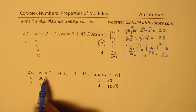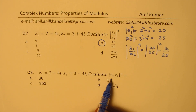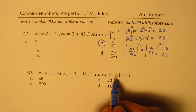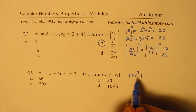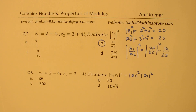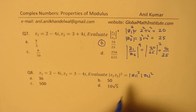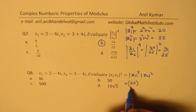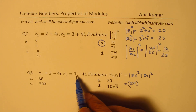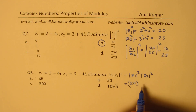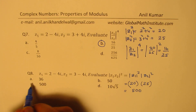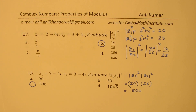Question number eight: given z1 and z2, evaluate the modulus of their product. The modulus of the product equals |z1|² times |z2|². Using the same complex numbers, |z1|² is 20 and |z2|² is 25. So 20 times 25 gives 500. Therefore option C is the right option.